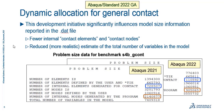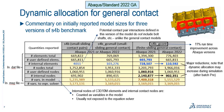This development initiative significantly influences model size information reported in the DAT file. Fewer internal contact elements and internal contact nodes will show up in the lists, and more realistic estimates of the total number of variables in the model will be shown. For the S4B gcont model, I'm showing problem size information copied from the DAT file for that same analysis across releases, and you can see the reductions are quite significant. The same data is shown in the last two columns of this slide, along with similar information for two other variations of this benchmark.